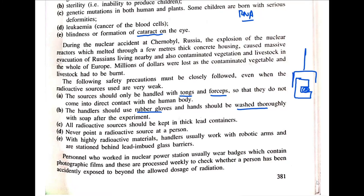Washing doesn't protect against radiation itself — it just ensures no radioactive material remains on your skin after the experiment. Even with rubber gloves, a small cut could leave a sample sticking to your fingers, eventually causing radiation poisoning. That is why we wash hands afterwards. Rubber gloves should also be lead-lined, because lead can absorb gamma radiation and therefore also stop alpha and beta from reaching the skin.